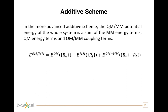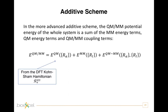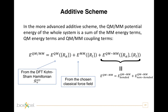This additive approach is the coupling scheme implemented in the QM/MM interface of the CP2K code that will be described in the tutorial. The quantum energy term usually comes from the DFT Kohn-Sham Hamiltonian in such an additive scheme. The classical energy term comes almost always from a classical force field. While the third term, describing the interaction between quantum and classical regions, is usually decomposed into two parts: the bonded and the non-bonded parts.